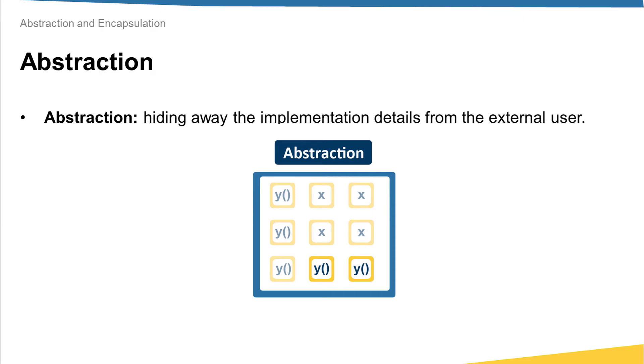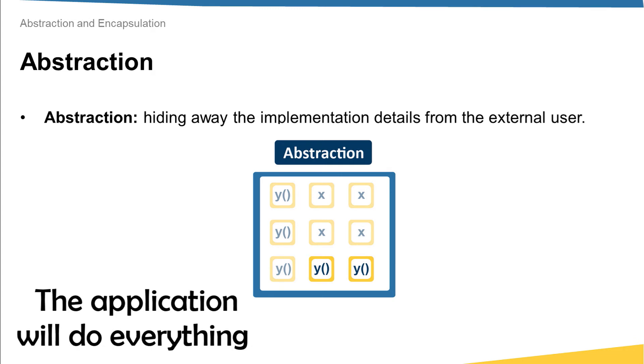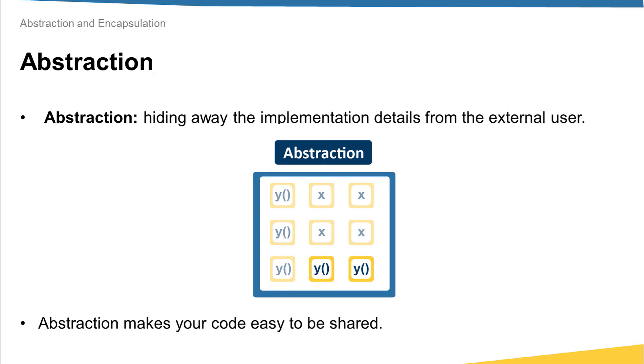An example about this: when you use an Uber application, for example, to get a taxi for your trip, simply you add your location and you add the destination location. After that, the application will calculate the best route for you, the estimation time, etc. So all of these details of calculation and estimation are away from you as an external user, and the application will do everything. So this is a simple example about abstraction.